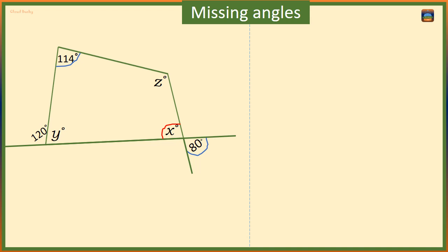Angle x is vertically opposite the angle that is marked 80 degrees, which is just outside the quadrilateral. Vertically opposite angles are always equal, so x is also 80 degrees.